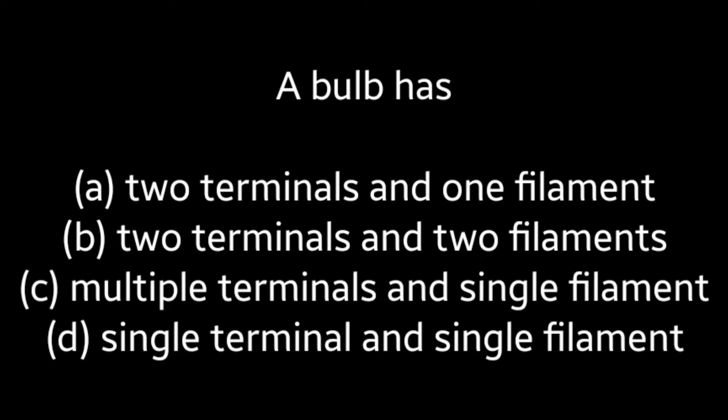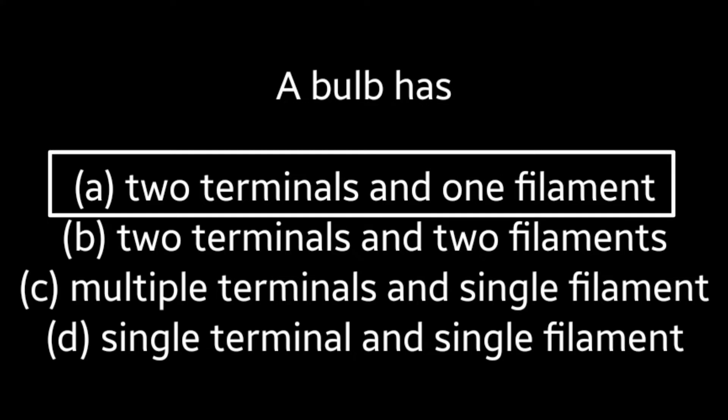Next question: A bulb has (A) 2 terminals and 1 filament, (B) 2 terminals and 2 filaments, (C) multiple terminals and single filament, (D) single terminal and single filament. Answer is Option A: 2 terminals and 1 filament.